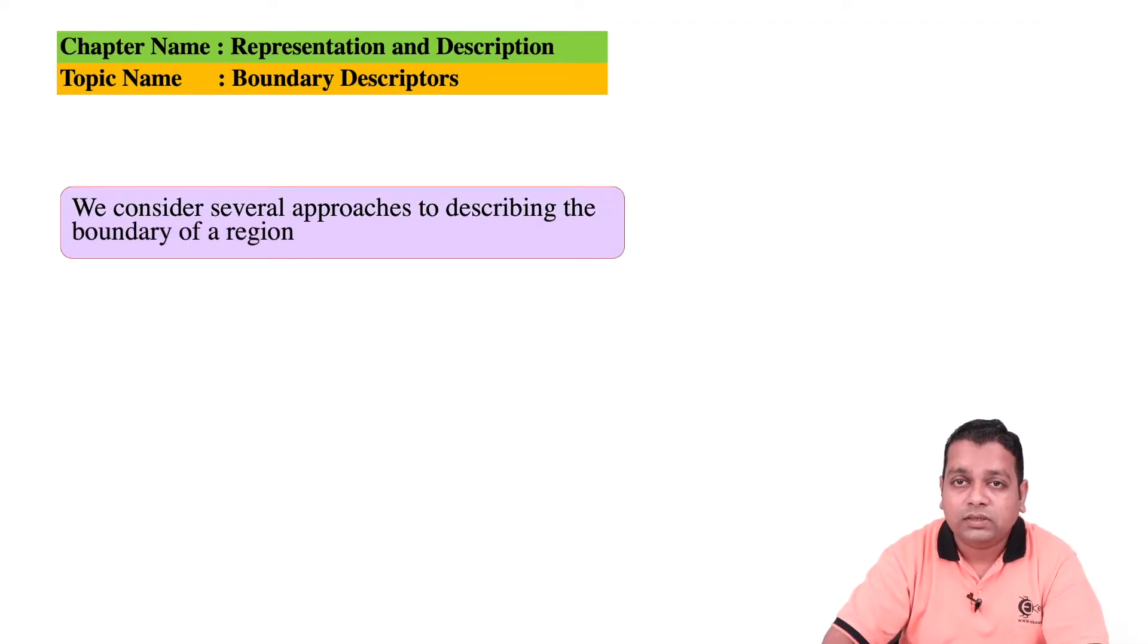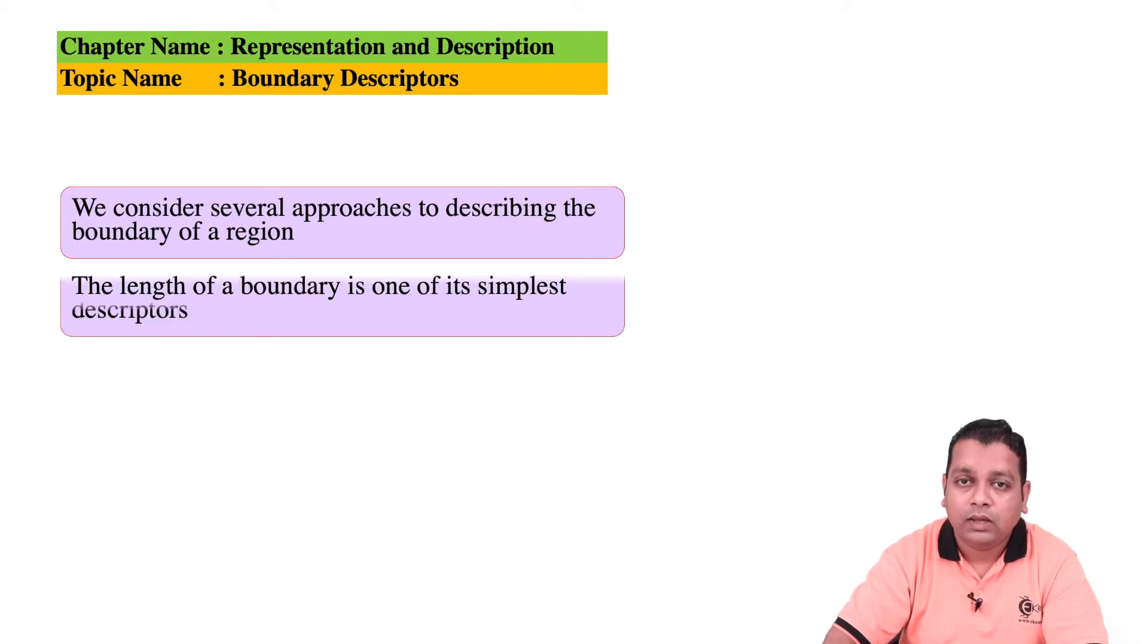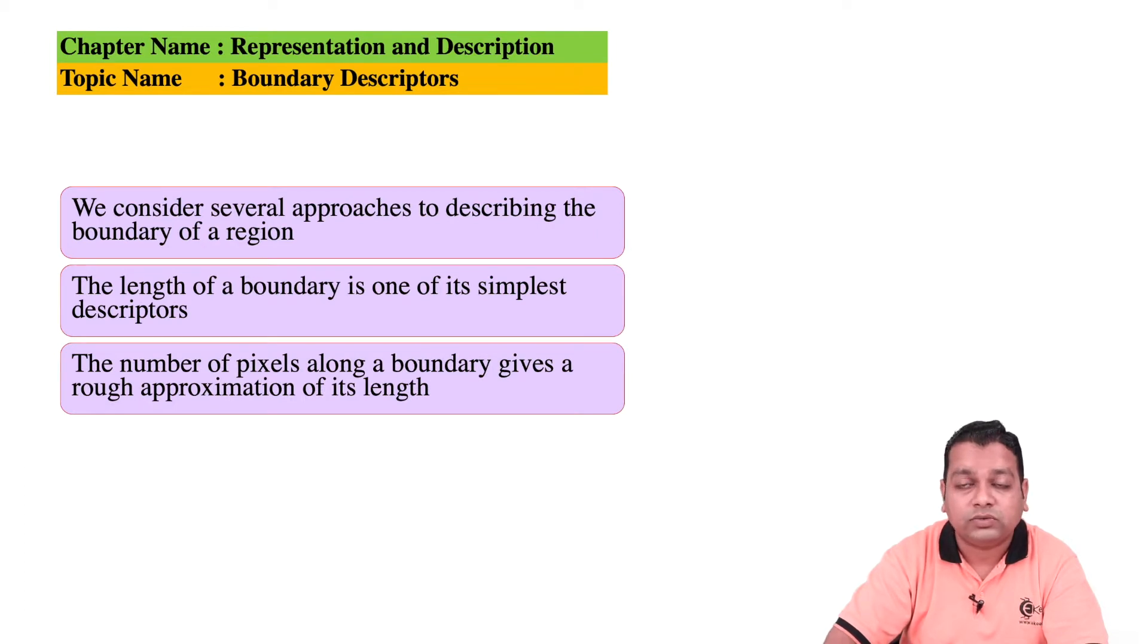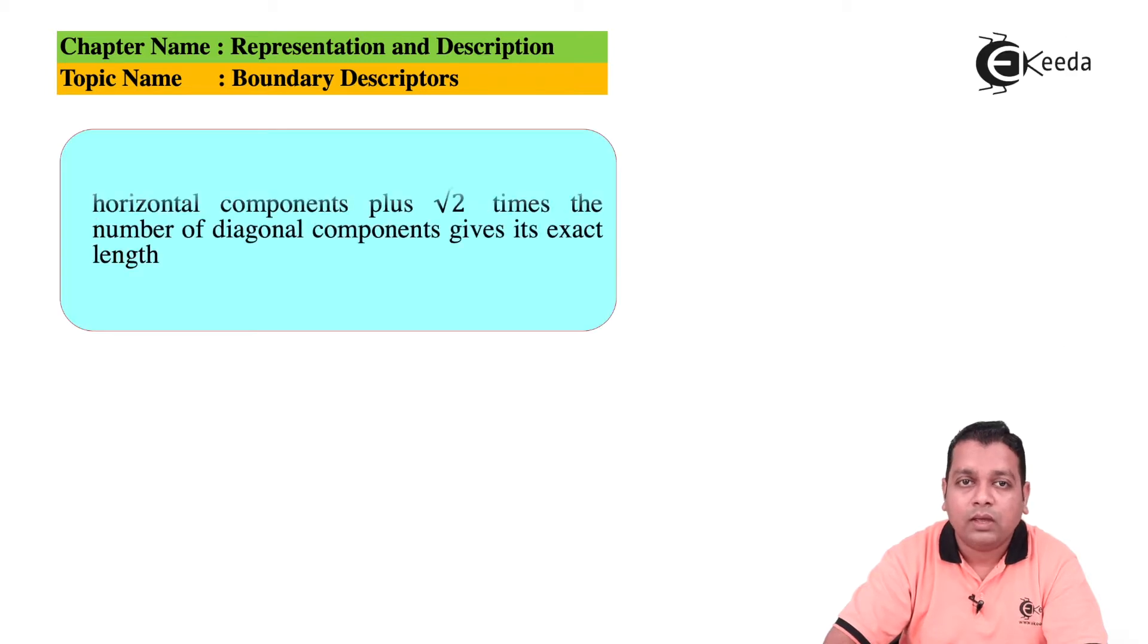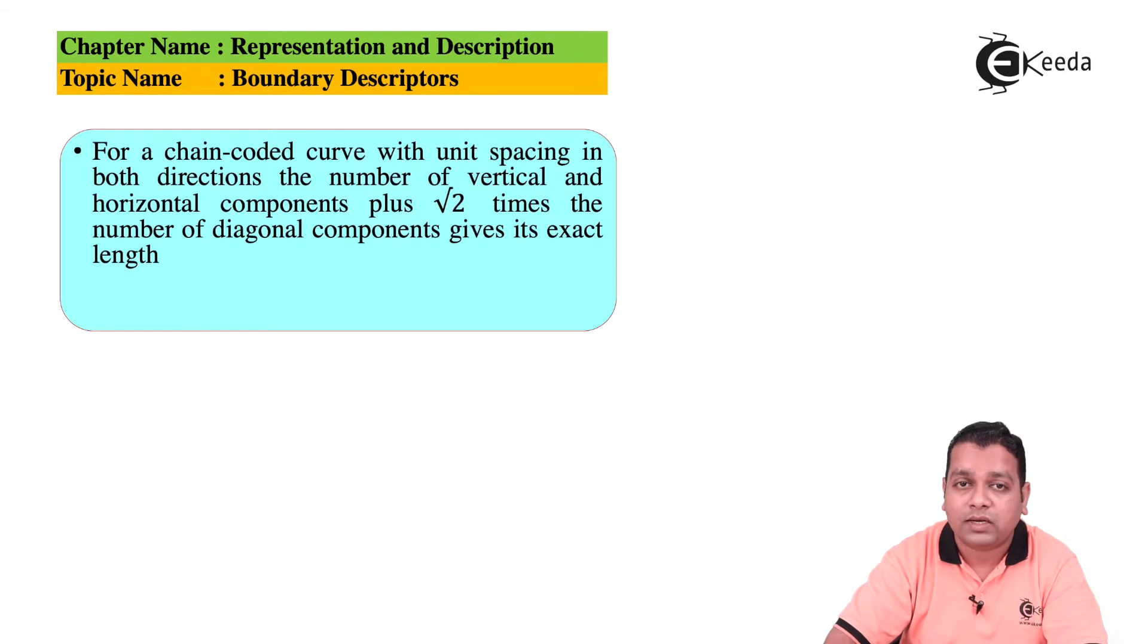We consider several approaches to describe the boundary of a concerned region. The length of the boundary is one of the simplest descriptors we have at first. The number of pixels along the boundary gives a rough approximation of its length value, or for a chain coded curve with unit spacing in both directions, the number of vertical and horizontal components plus square root of two times the number of diagonal components gives the exact value of the length.